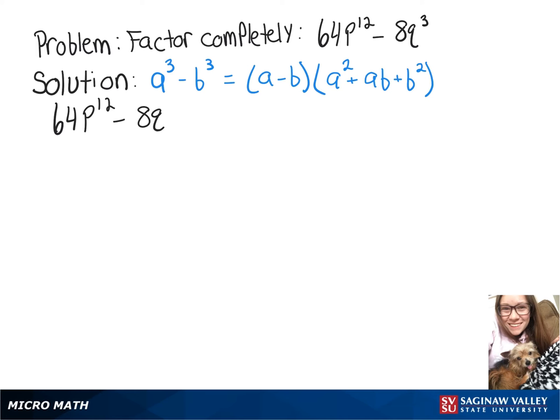But the first thing we're going to do is factor out an 8. So we're going to rewrite our expression as 8 times 8p to the 12th minus q to the 3rd.